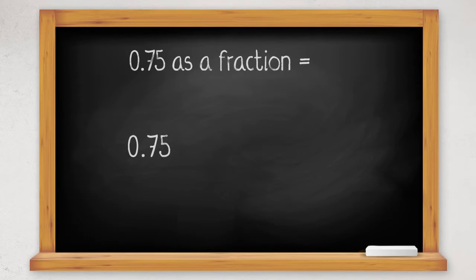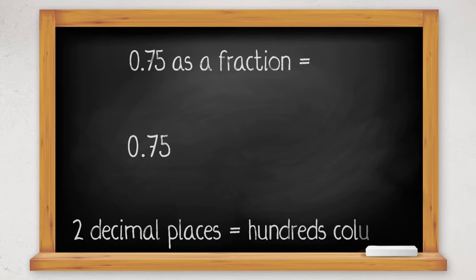To change a decimal to a fraction, for example change 0.75 into a fraction, we look at how many decimal places are in the number. There are two decimal places, so we have gone as far as using the hundredths column.